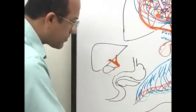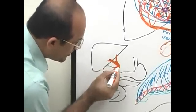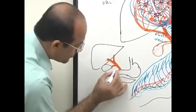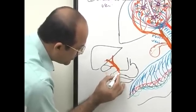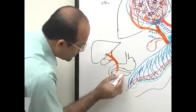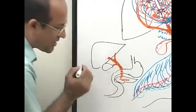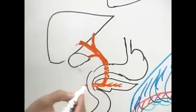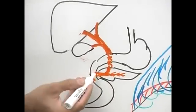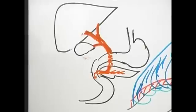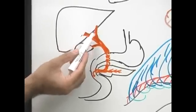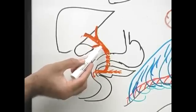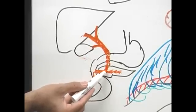From the gallbladder comes the cystic duct, which joins the common hepatic duct to form the common bile duct. The common bile duct comes behind the duodenum, passing to the pancreas, where it meets the pancreatic duct.